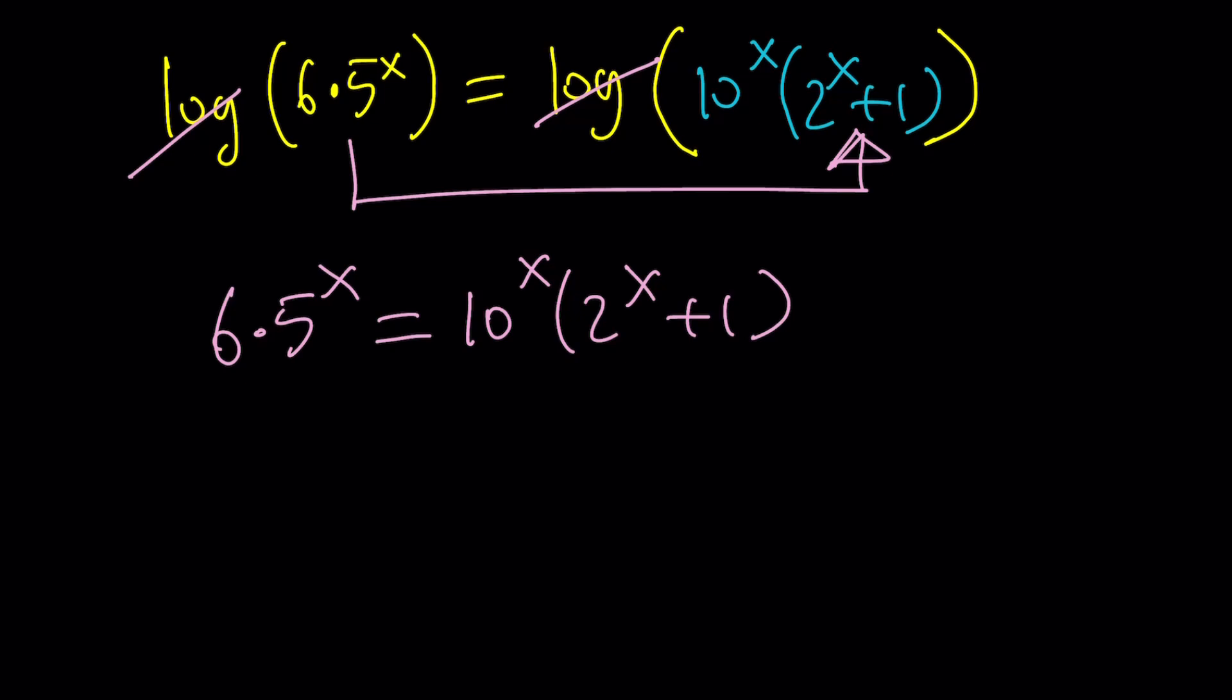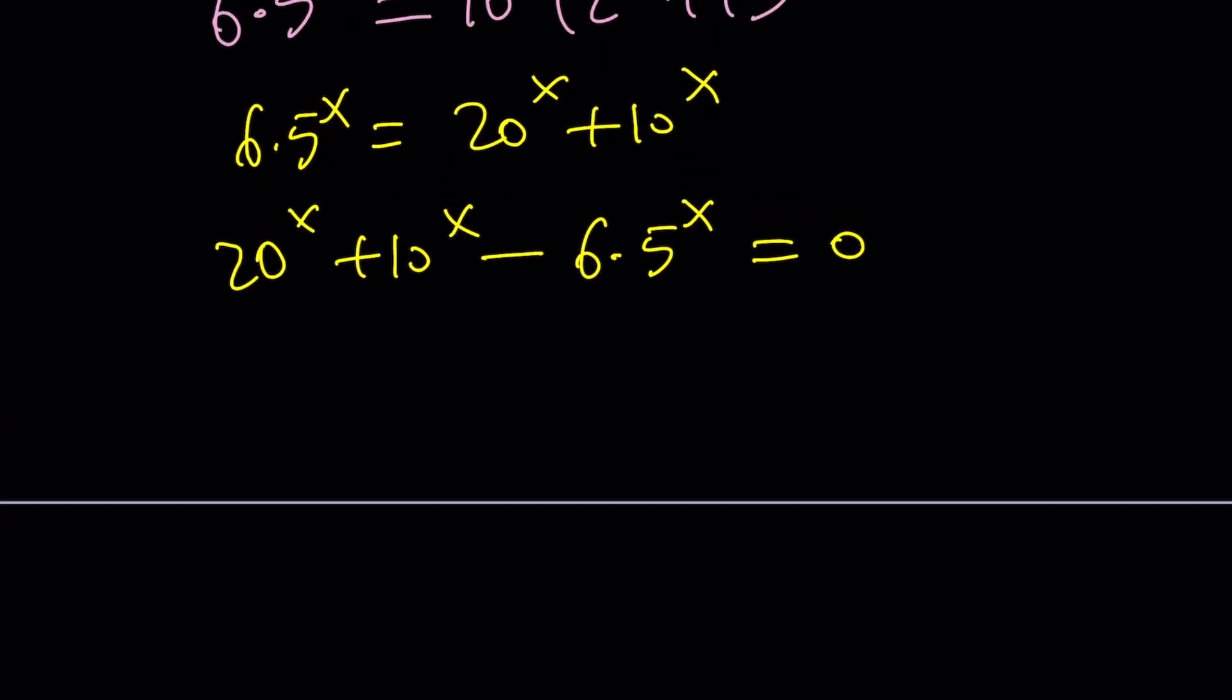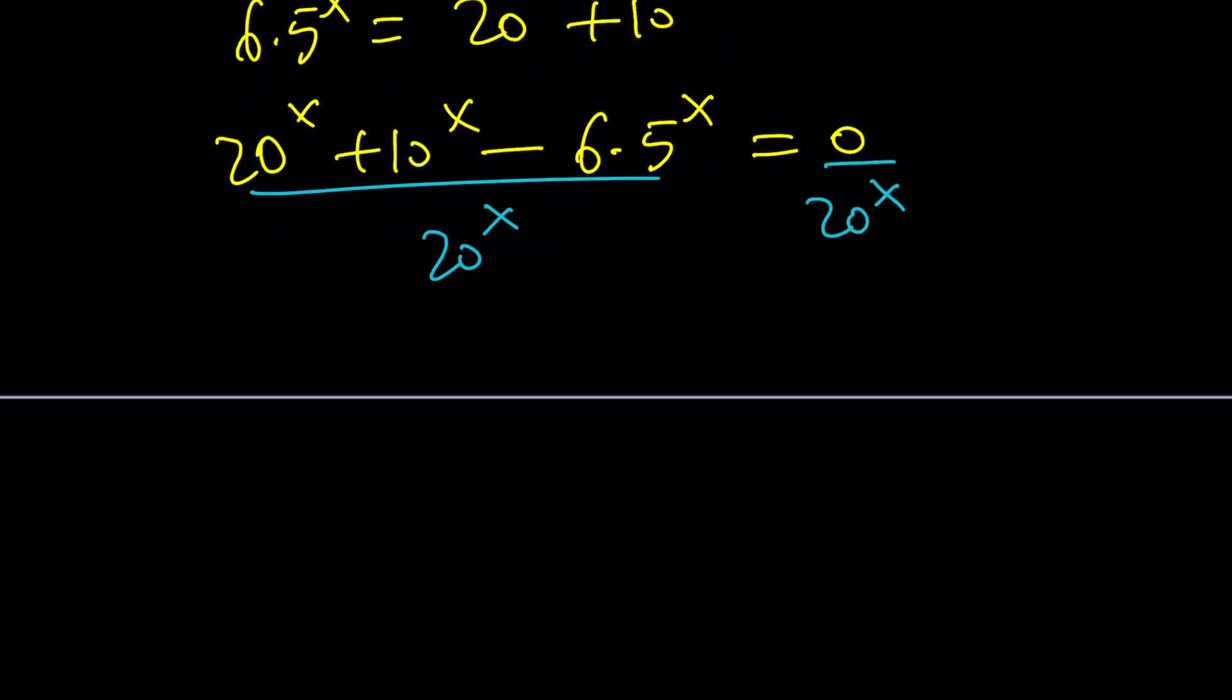When you look at an equation like this, there's a couple different ways to approach it. One method is distribute everything. It's going to be 20 to the x plus 10 to the x. And you can put everything on the same side if you want. We have three different bases, but they're not totally unrelated. 5 and 10, 10 and 20. Maybe it might be helpful to try to factor this. But here's one thing we can do - divide everything by one of the bases. Dividing by the larger base would be a good idea. Let's divide both sides by 20 to the power of x.